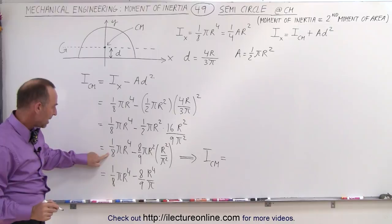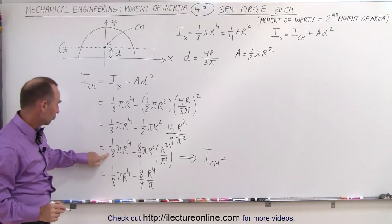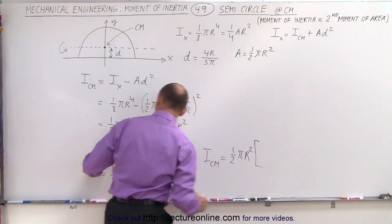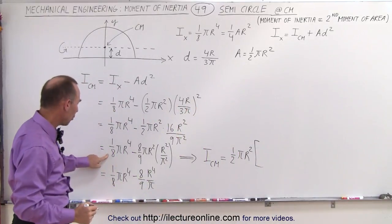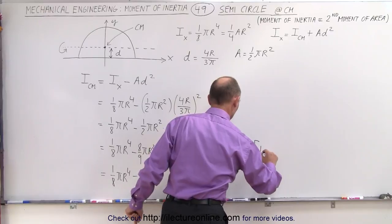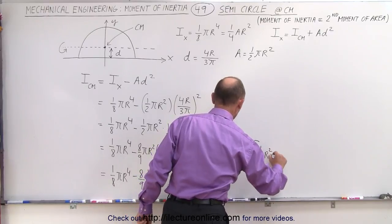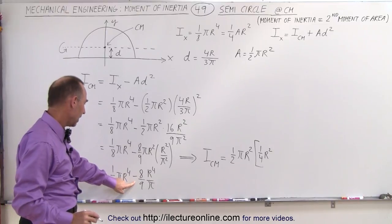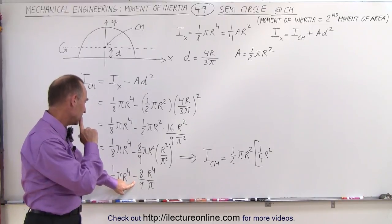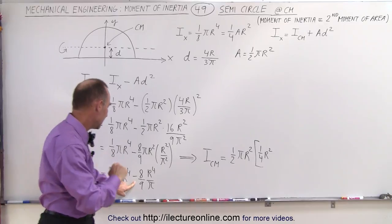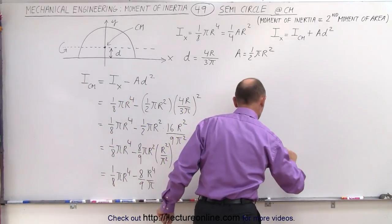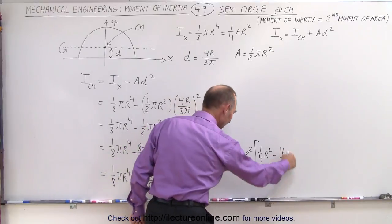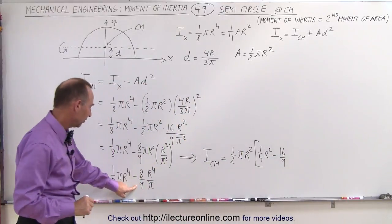Which leaves me with 1 quarter r squared, and then minus, I have a 1 half, so that means 16, that would be minus 16 over 9, because when I multiply this times this I get 8 over 9 again, so that would be 16 over 9.